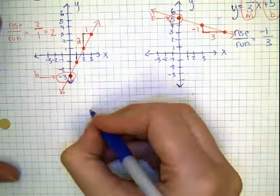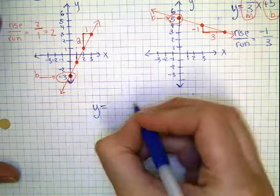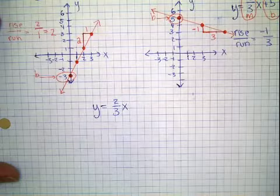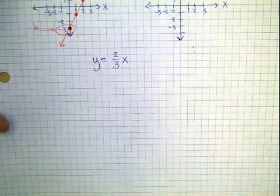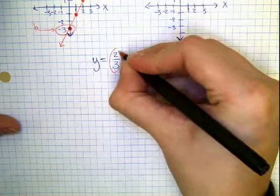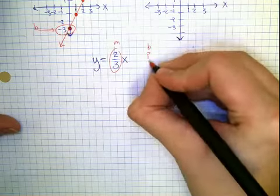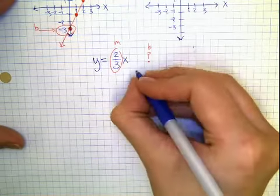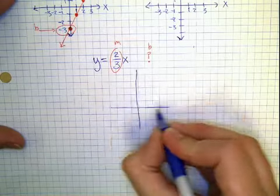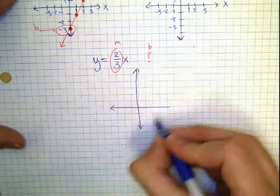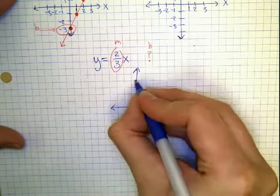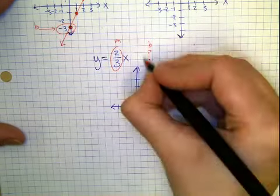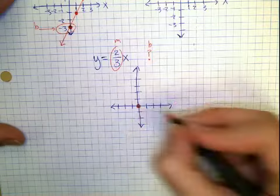If, for instance, we had another example where the rule was Y equals two-thirds X, and that's all it looked like, then we're going to notice that two-thirds, that's the number with the X, that's the M. But if I asked you what the B is, there is no B. B is basically zero. So when you make this graph, it's going to start at zero, at the center of the graph. In algebra, we call the center the origin. Since B is not even here, we start right in the middle, right there.